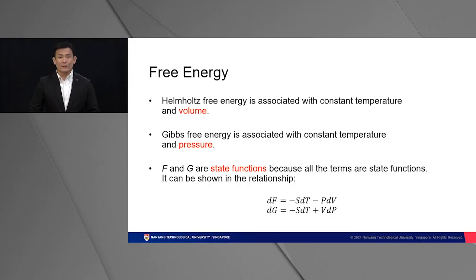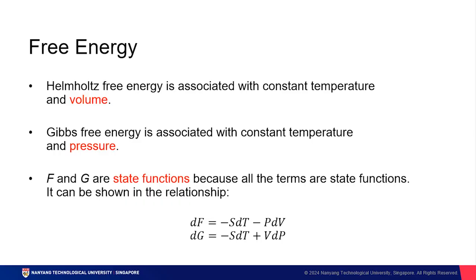To wrap up our introduction into free energy, let's go through the difference between the terms once again. The difference between Helmholtz and Gibbs free energy is that Helmholtz free energy is associated with constant temperature and volume, while Gibbs free energy is associated with constant temperature and pressure. They are both state functions because all the terms that make them up are state functions. And they can both be expressed in the following relationships where dF = -SdT - PdV and dG = -SdT + VdP.